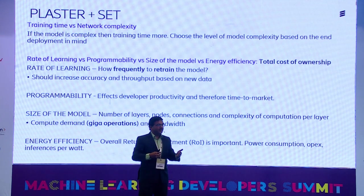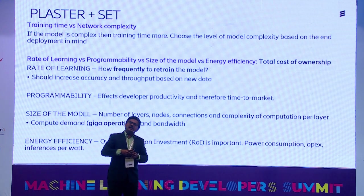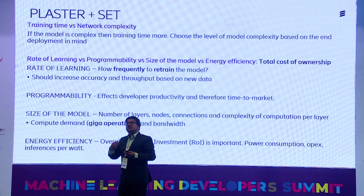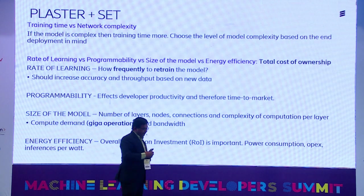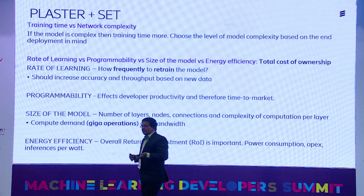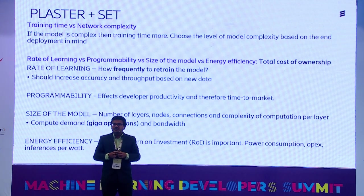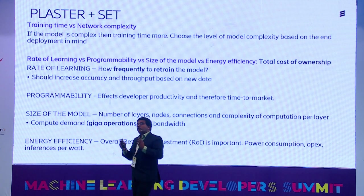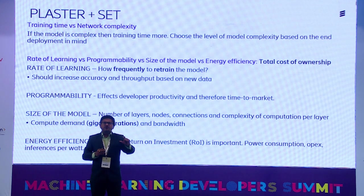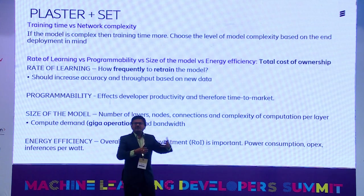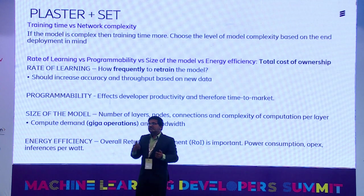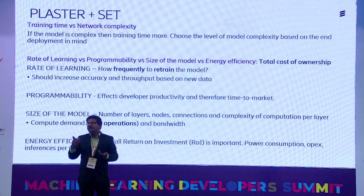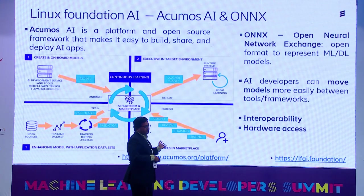The rate of learning — how often you need to retrain — is linked to how automatically the modeling is done versus how much engineer involvement is needed. Size of the model is linked to energy efficiency: a larger model adds more giga-operations, increasing total cost of ownership. To summarize: one team may develop a model with 97% accuracy using 500 layers; another achieves 95% with only 100 layers and a smaller footprint. Maybe we go with the latter in final production. Think broadly across all these dimensions.